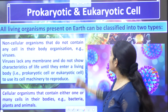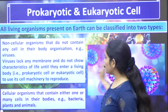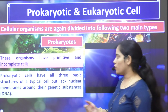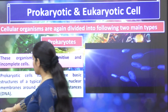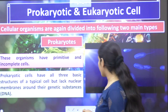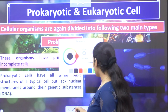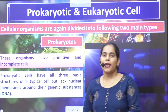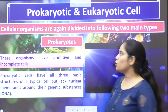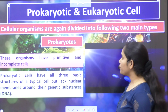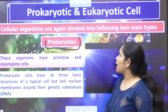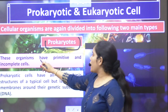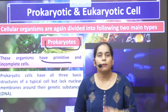Now we will see how cellular organisms divide into prokaryotic and eukaryotic. As many cellular organisms as there are, their classification is made of two types: some are prokaryotic and some are eukaryotic.